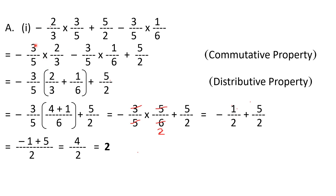Number one is: minus two by three into three by five, plus five by two, minus three by five into one by six. You look for plus and minus signs — these signs separate the terms. So the terms are: minus two by three into three by five is one term, plus five by two is another term, and minus three by five into one by six is the third term. There is no variable, so all are like terms.